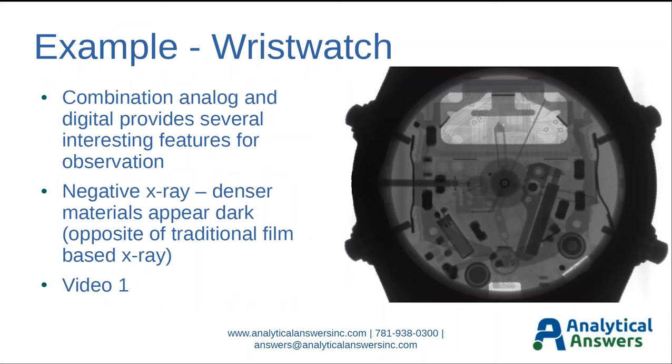I'm going to start with a very light example of a wristwatch, my wristwatch, in fact. As a combination analog and digital component, it provides several interesting features for examination. We have these push buttons that operate switches, the mechanism of the analog watch itself. We can examine solder joints for the electrical components and look inside the quartz crystal that drives the timer. One thing to note is that these are all negative X-rays where denser materials appear dark, opposite of your traditional film-based X-ray. The typical way for industrial X-ray is to show heavier atomic number materials as dark.